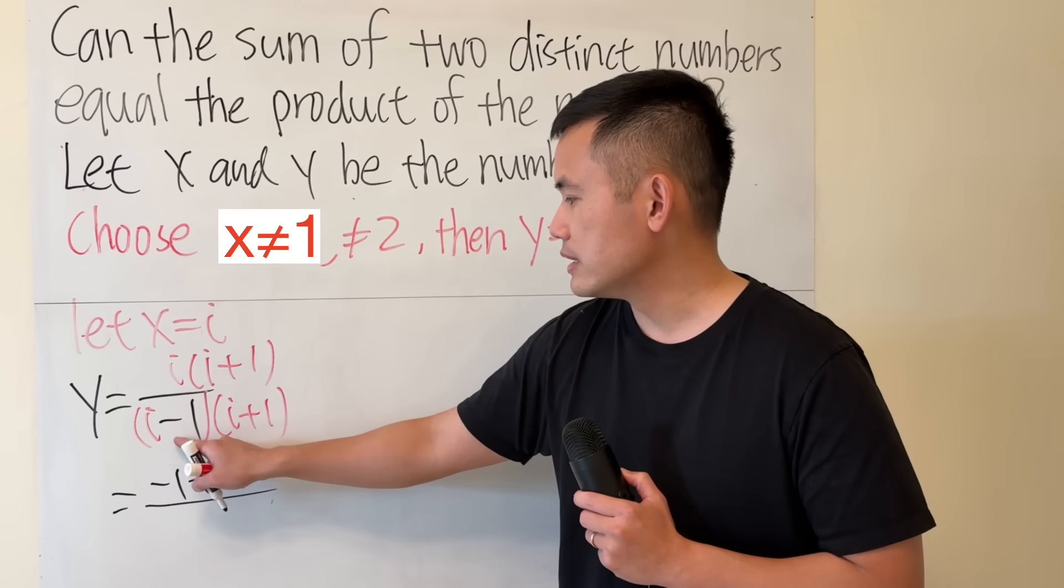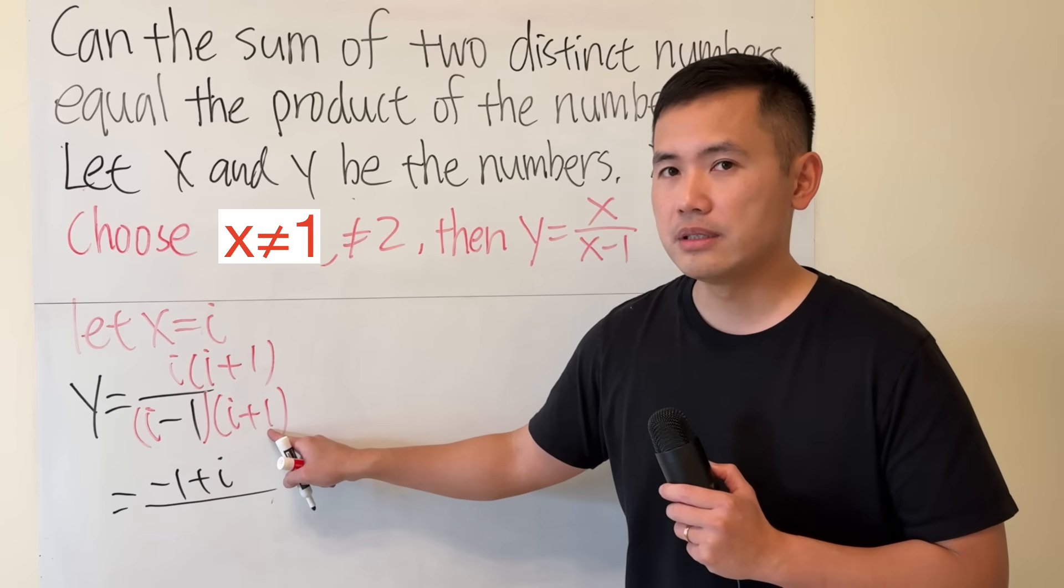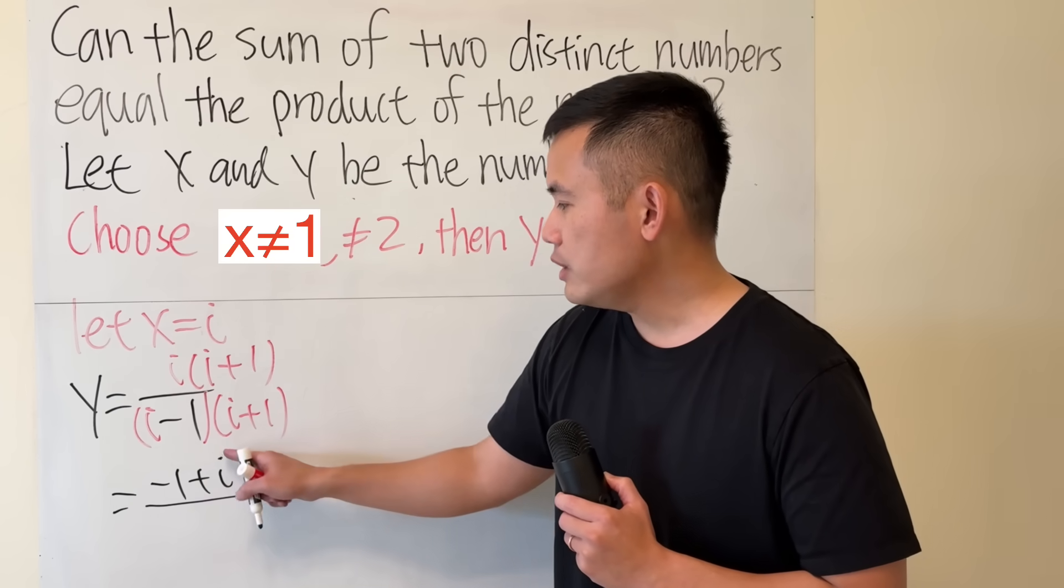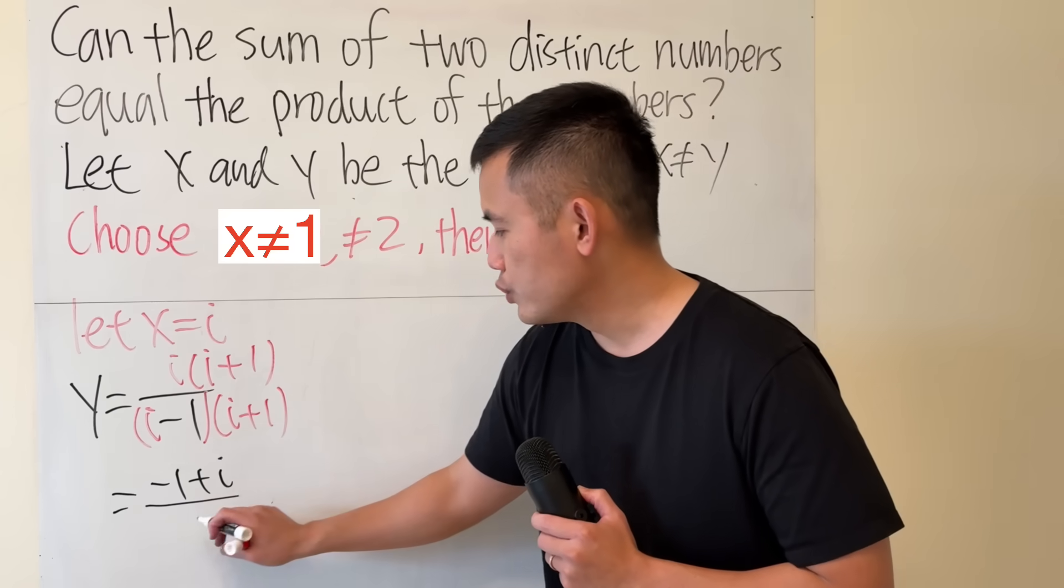On the bottom, we have i squared, which is negative 1. This times this will cancel with this times that. Negative 1 times negative 1 is negative 1. So we have negative 1 minus 1, which we get negative 2.